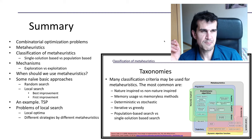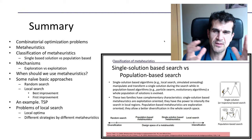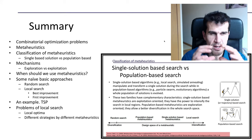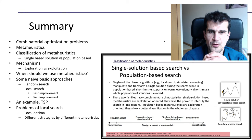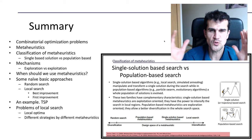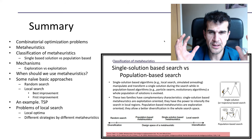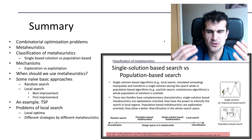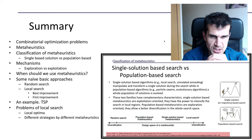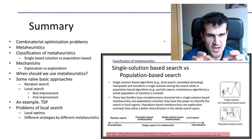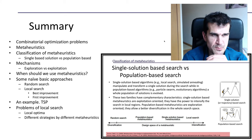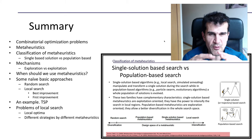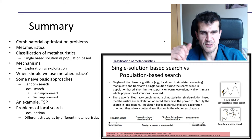Single-solution based means that at any point in time the metaheuristic is working with just one solution, while in a population-based metaheuristic we have a whole set of different solutions working at the same time, and we can use information from the whole population to create the next population. Often single-solution based methods tend to focus more on intensification of the search, while population-based methods tend to explore more of the search space.